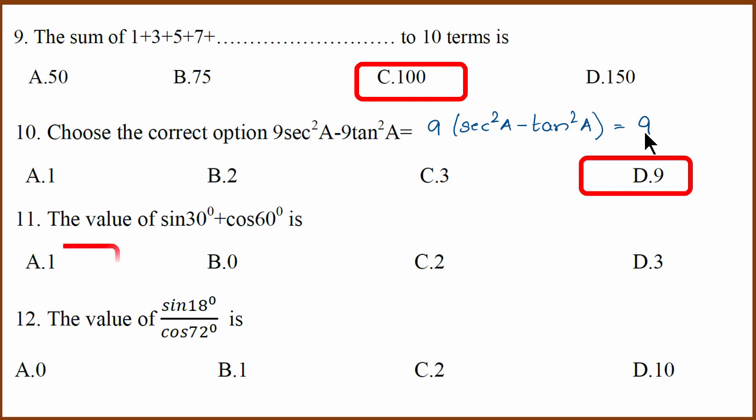The next one is 1. Why? Because sin 30 is half, and cos 60 is also half. Half plus half is 1. The next one is 1 again, because of the complementary angle formula. Sin 18 equals cos 72, because sin 90 minus 18 is cos 72.